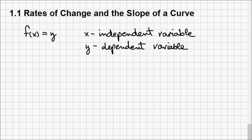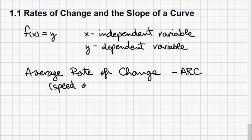We are going to use the following terminology. Average rate of change, in short ARC, which represents the speed of change on an interval for this function.